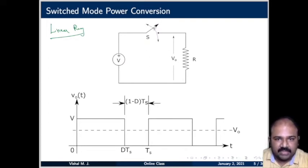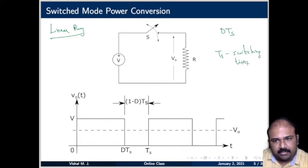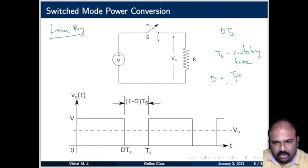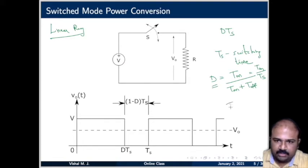We keep the switch closed for some amount of time — let it be D times TS, where TS is the switching period. D is called the duty ratio, that is the duration for which the switch is on compared to the total duration, which is TON divided by TS. D will be between 0 and 1. So TON equals D times TS.